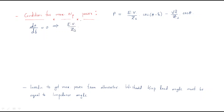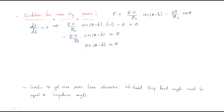Setting dP/dδ = 0, the constant EV/Zs differentiates so that cos(θ-δ) becomes sin(θ-δ), giving a factor of minus one. The term V²/Zs·cosθ becomes zero because there is no δ term. So we get EV/Zs·sin(θ-δ) = 0, which means sin(θ-δ) = 0, and therefore θ - δ = 0.